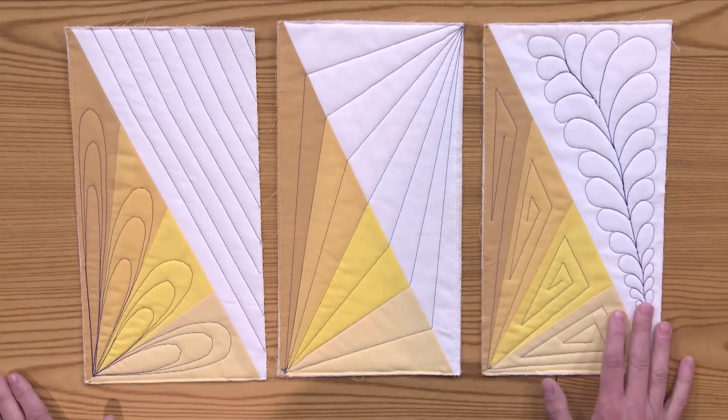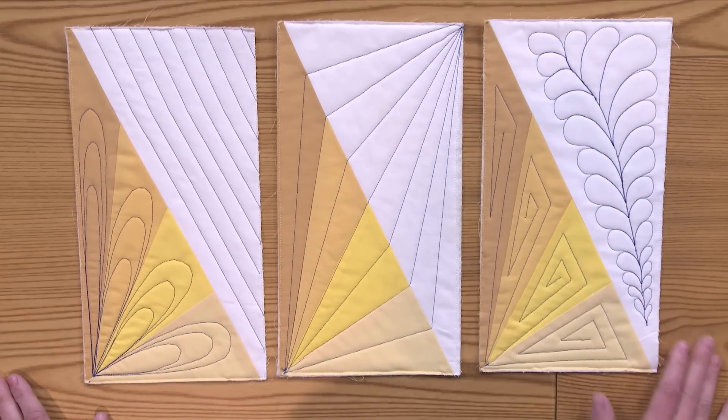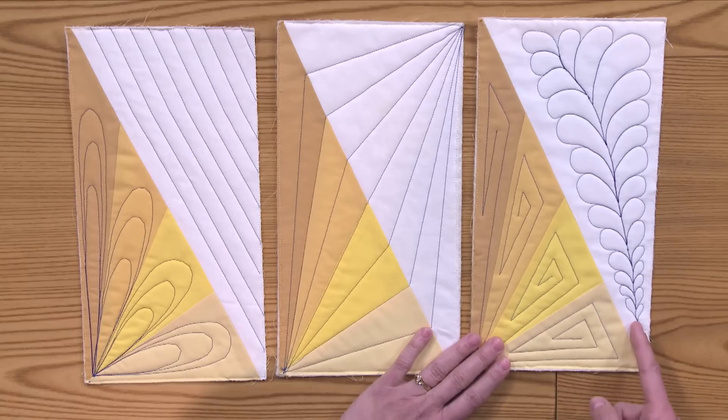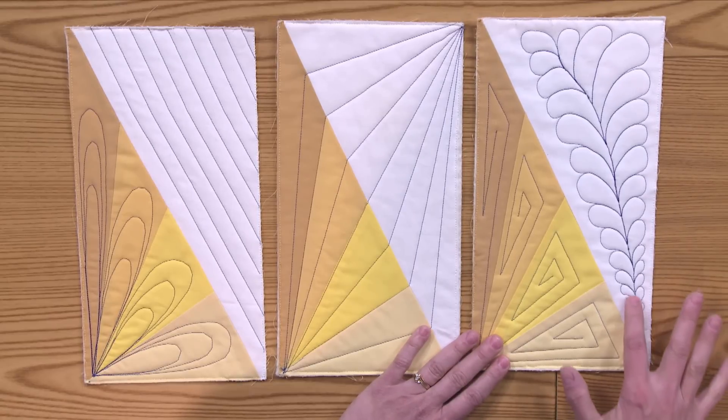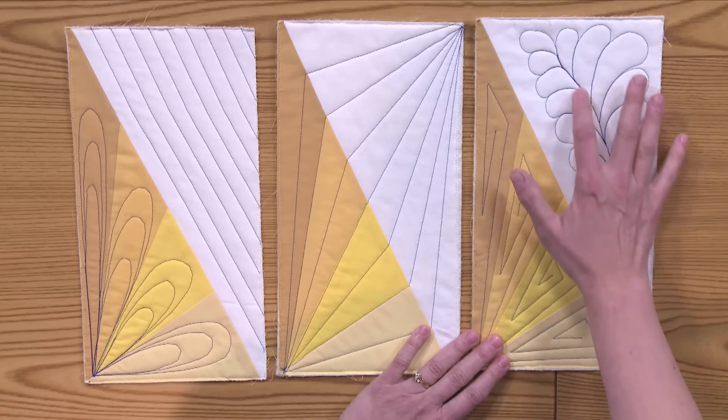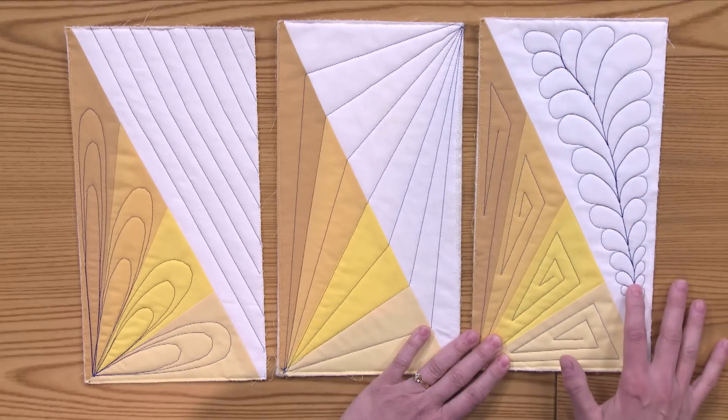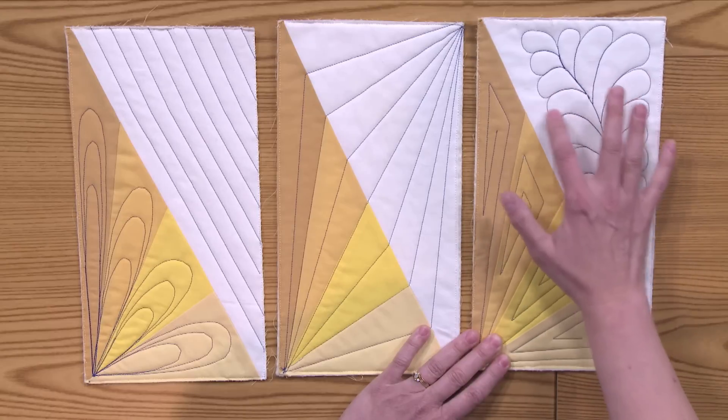This third block also uses the patchwork as a guide. You can start with the feather, and the easiest way to do the feather is to take a marking tool and just draw this straight line right here to mark the center of your feather, and then fill in with the feather shape.